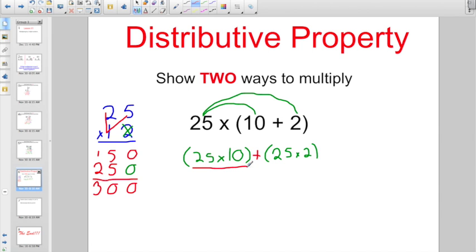Let's try it this way. 25 times 10 in parentheses. Well, we should know that. That's 250. Plus, let's go and combine our other set of parentheses terms. 25 times 2. That's 50. And now I have last two sets of terms to combine. What's 250 plus 50? That's 300 as well.